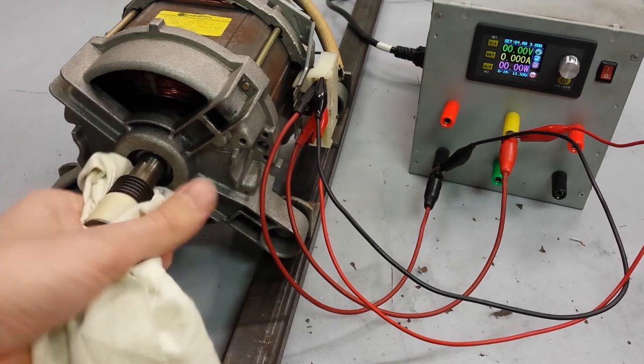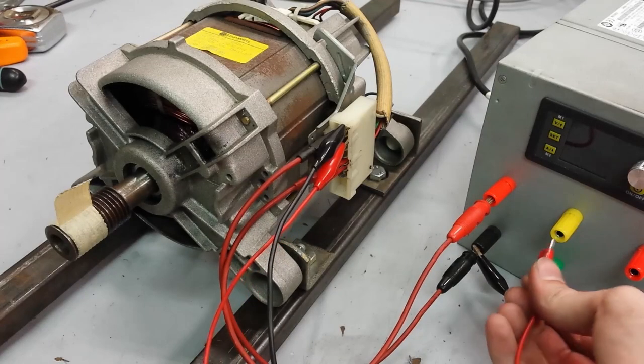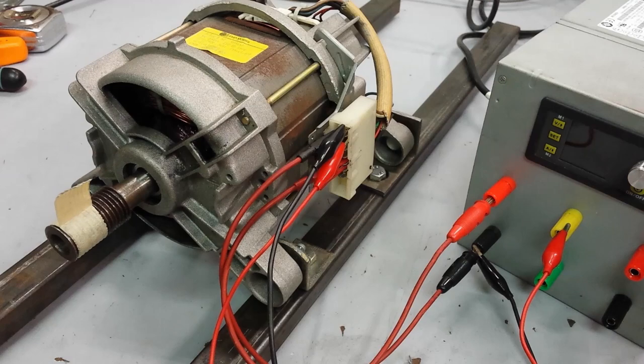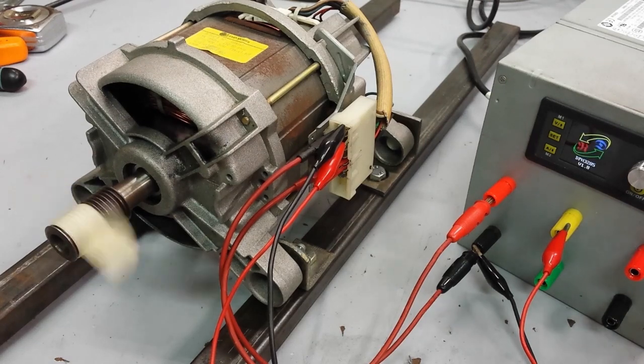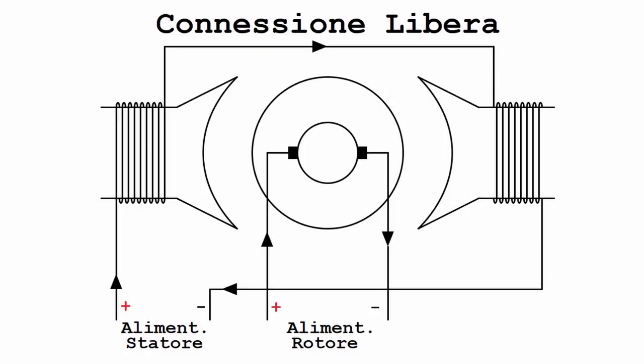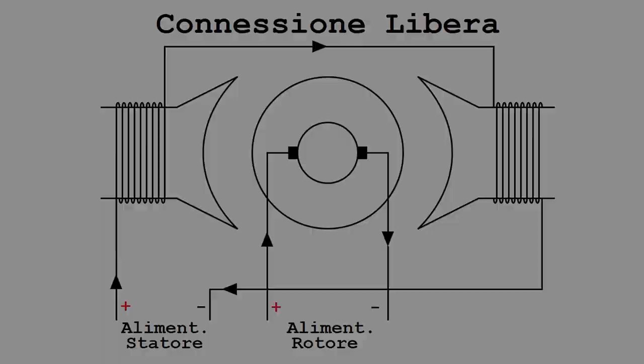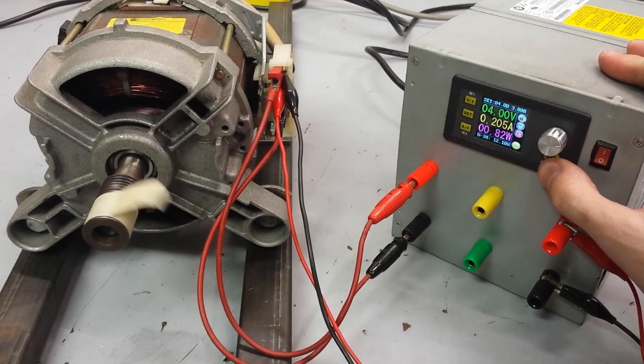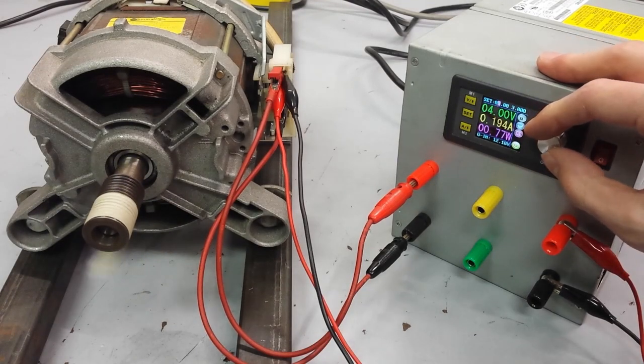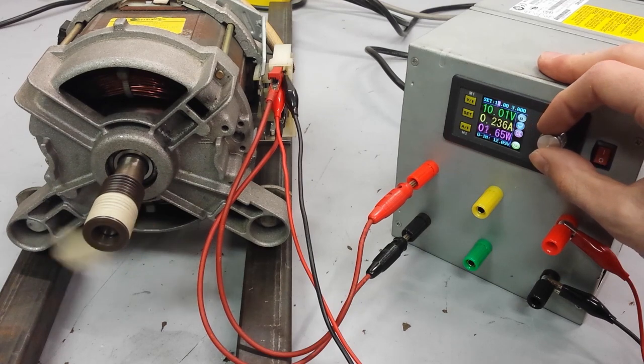I bet you have guessed my next moves by now. As my last step by exploiting all the connections I power the stator with constant voltage and change the voltage applied on the rotor, thus controlling the RPMs. This time without losing too much torque.